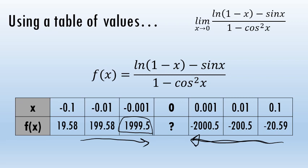These numbers are not approaching the same value from both sides of 0. Because of that, the limit does not exist.